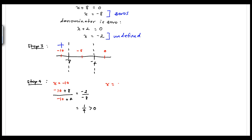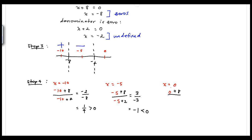Next, testing x = −5: (−5 + 8) / (−5 + 2) = 3 / −3 = −1, which is less than zero. So numbers between −8 and −2 are negative. The last test point is x = 0: (0 + 8) / (0 + 2) = 8/2 = 4, which is greater than zero. So numbers to the right of −2 are positive.